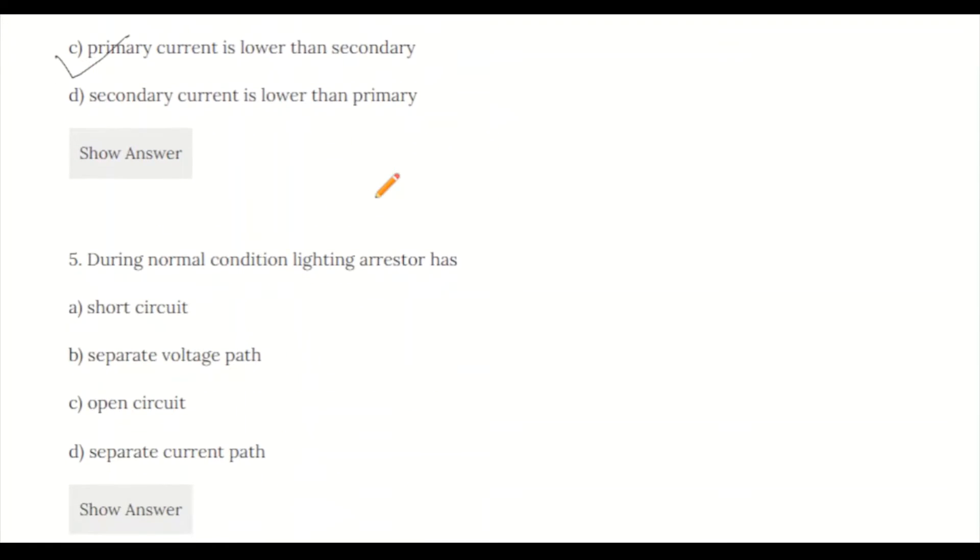Question 5: In normal condition, lightning arrester has: a) short circuit, b) separate voltage path, c) open circuit, d) separate current path. The answer is open circuit. In normal working condition, lightning arrester remains in open circuit. In fault condition, it becomes short circuit.